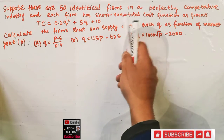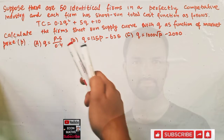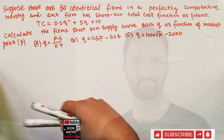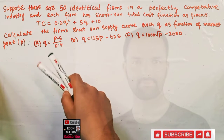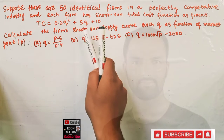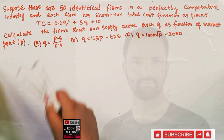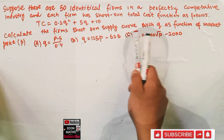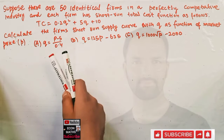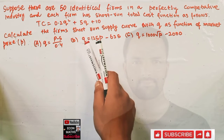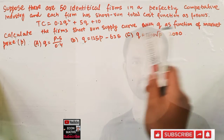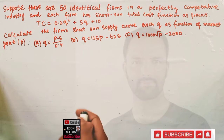Suppose there are 50 identical firms in a perfectly competitive industry and each firm has a short-run total cost function given by 0.2q² + 5q + 10, where q denotes the output. Calculate the firm's short-run supply curve with q as a function of market price p. The options are: q = (p - 5) / 0.4, q = 125p - 625, or q = 1000√p - 2000. We have to see which option is correct.